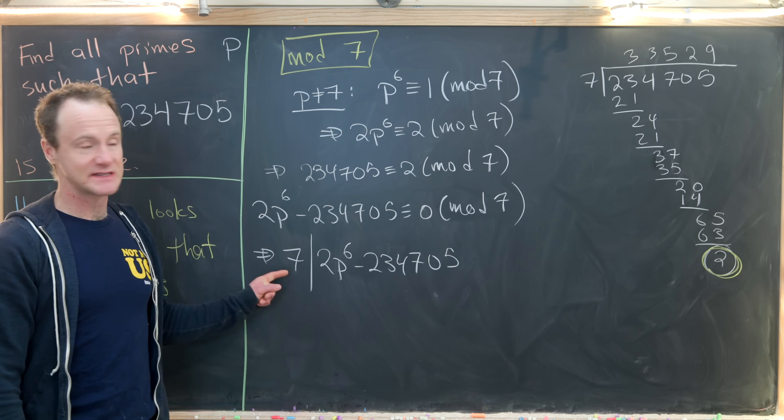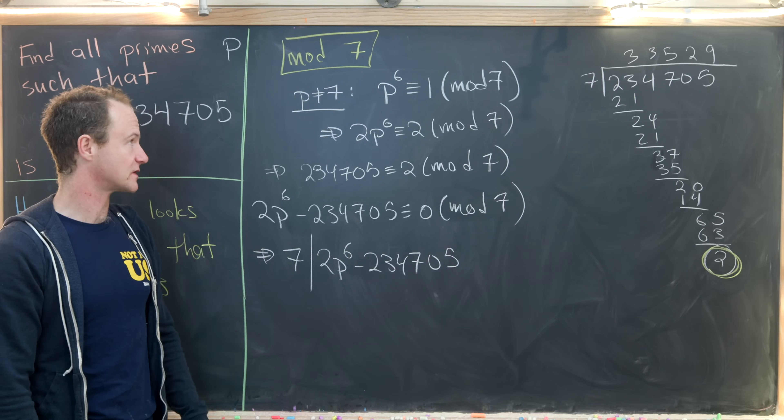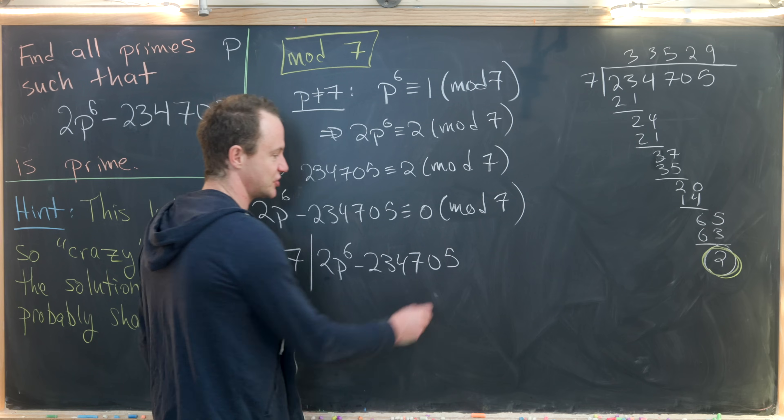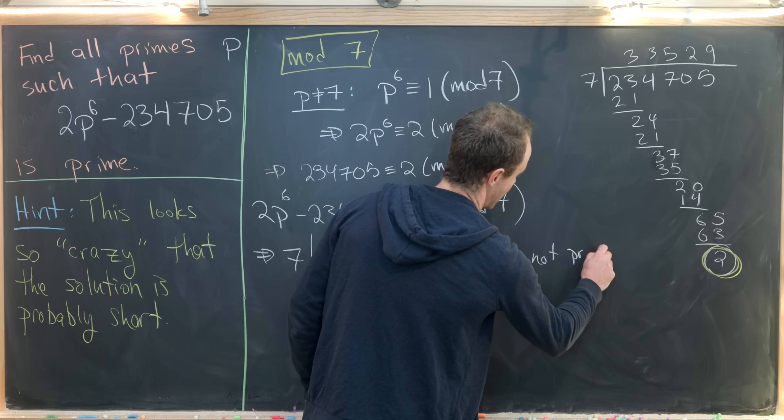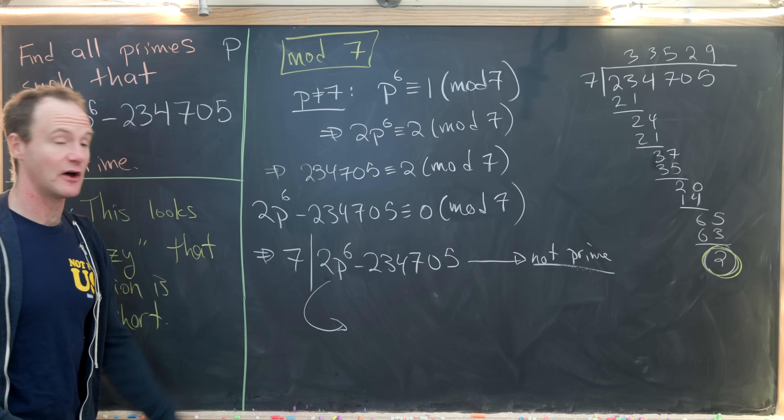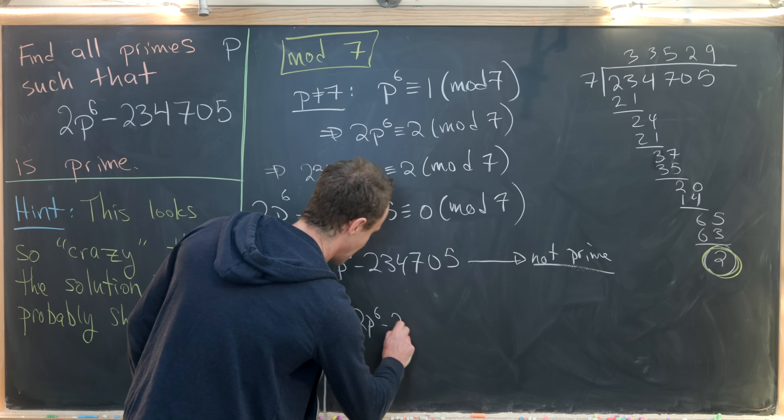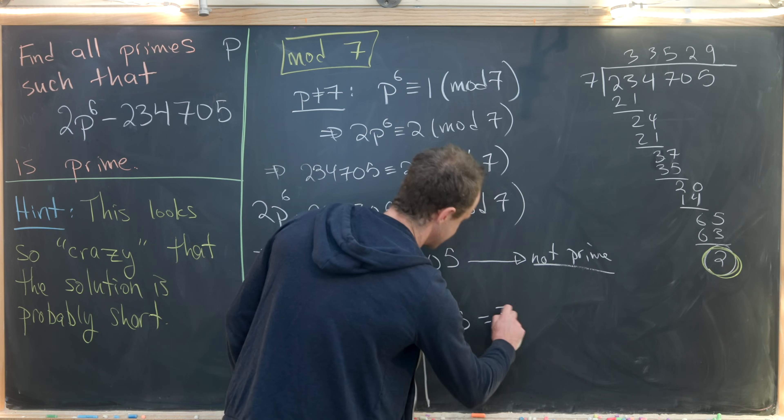And like I've been saying, this is all in the case when p is equal to 7 or p is not equal to 7. Well, if 7 divides this number, then this splits into two cases. The first case is if it's not prime. And the second case is that this number itself is equal to 7. So that'll be 2p to the 6 minus 234,705 equals 7.